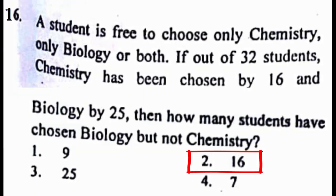Problem number 16: A student is free to choose only chemistry, only biology or both. If out of 32 students, chemistry has been chosen by 16, biology by 25, then how many students have chosen biology but not chemistry? The correct answer to this problem is option 2, that is 16.